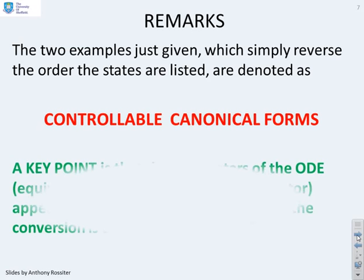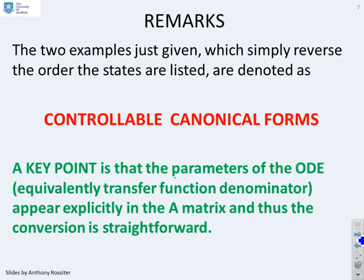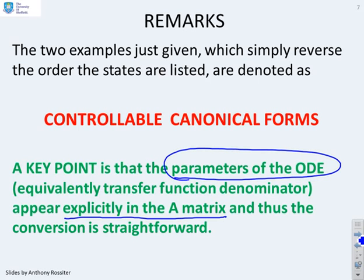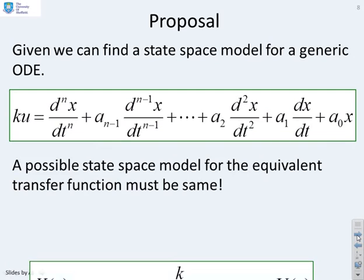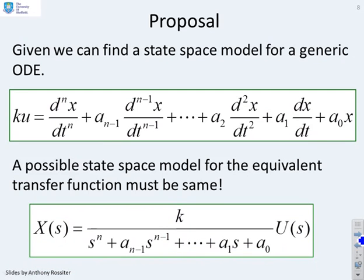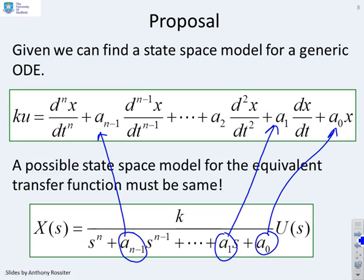So the two examples just given simply reverse the order of the states. And they're both control canonical forms. But what's the key point? The parameters of the ODE, which were the A0, A1, A2, and so on, appear explicitly in the A matrix. And therefore we can write the A and B matrices by inspection. So what's the proposal? We can find a state-space model for generic ODE. We've done that in video 3 and reminded you here. But we've also recognised that this transfer function model represents the same ODE. And you can also see that the coefficients are the same. So therefore, all I'm going to do is say, Look, if I've got this transfer function, I'm going to pretend it's this ODE. And then I can write the state-space model by inspection.